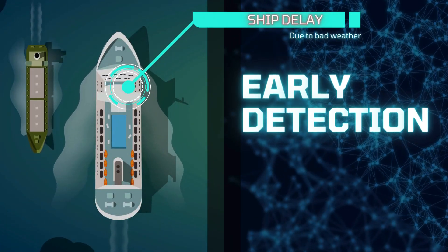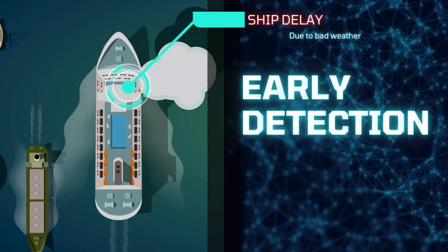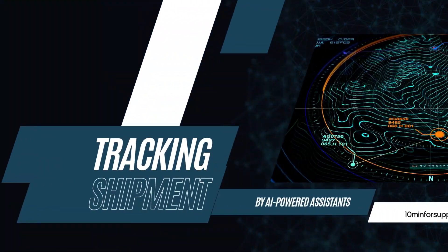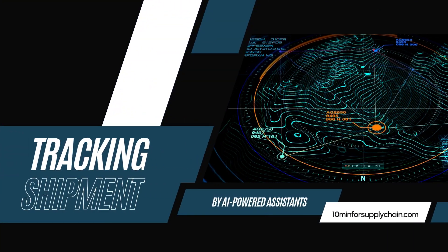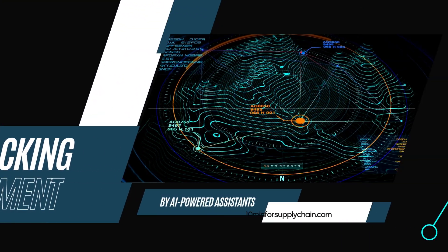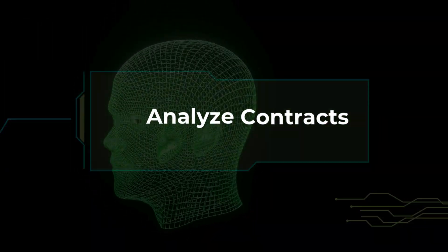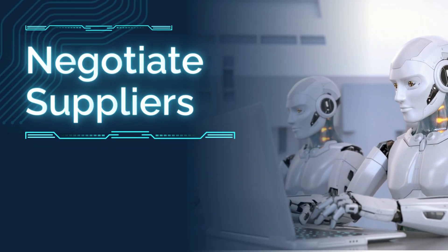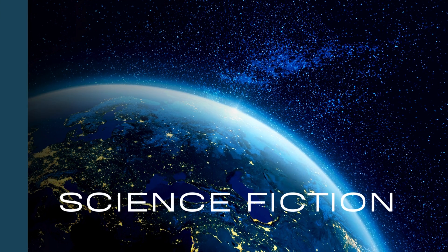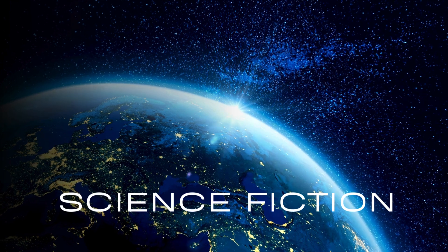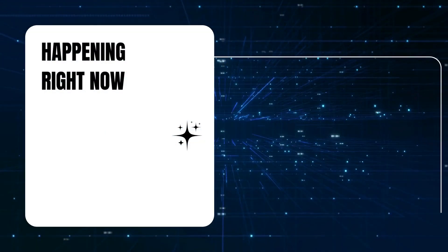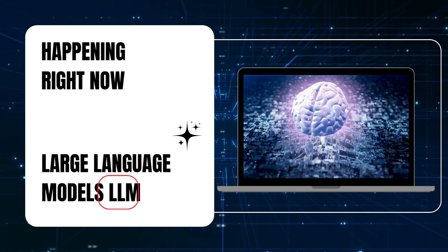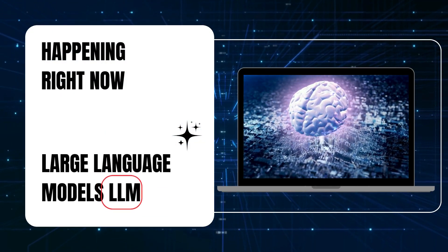Imagine a world where supply chain disruptions are predicted before they even happen, where AI-powered assistants can track your shipments, analyze contracts, and even negotiate with suppliers, all in real time. Sounds like science fiction? Well, it's happening right now, thanks to large language models, or LLMs.